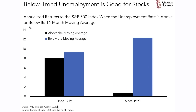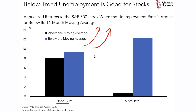If you take a look at the data since 1949, it's a completely different question — the data is a lot less conclusive, meaning there were a lot more periods where the unemployment rate was rising and the stock market was actually performing well, and vice versa — periods where the unemployment rate was declining and the market was also declining.